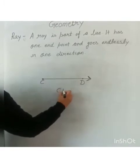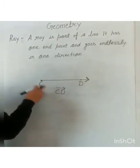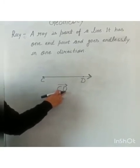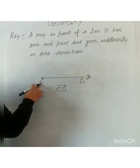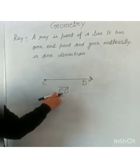So we will represent it ray like this. We will start with end point C. Then we will write D. We will represent it as CD, ray CD.